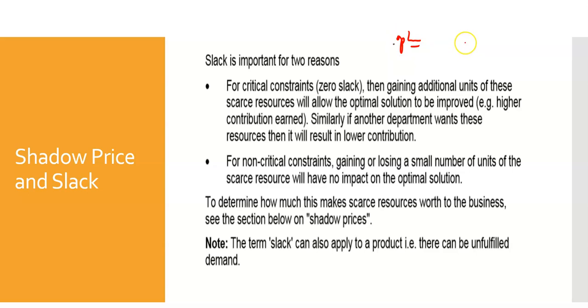The point of slack means that at this point where you're at optimal, there's no point buying any more slack. If you buy any more slack, you're still restricted by those critical issues. So gaining or losing a small unit of the scarce resource will have no impact - sorry, for critical constraints with zero slack, gaining additional units of these scarce resources will allow the optimal unit to be improved.